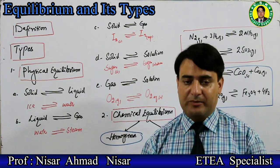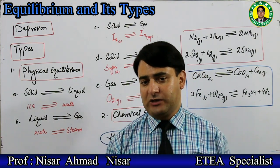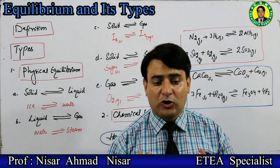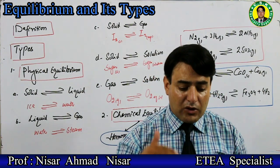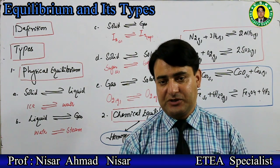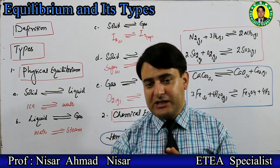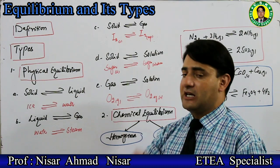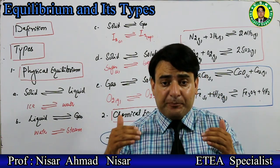Generally, equilibrium is of two types: physical equilibrium and chemical equilibrium. What does physical equilibrium mean? Remember that equilibrium which exists between the same chemical species - when equilibrium exists between the same chemical species, such equilibrium is called physical equilibrium. We call this stage a physical process.